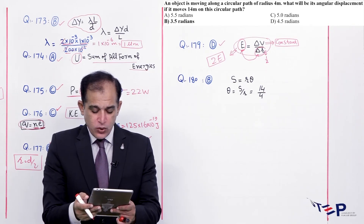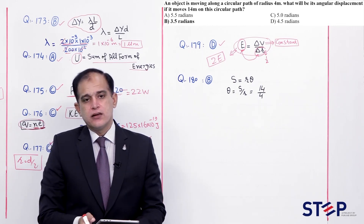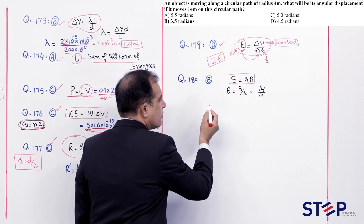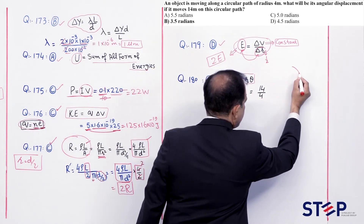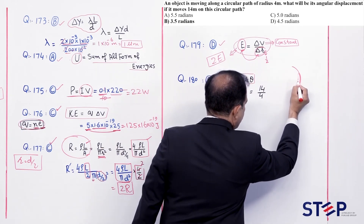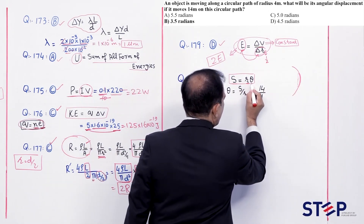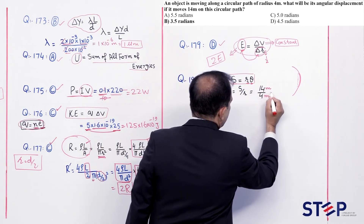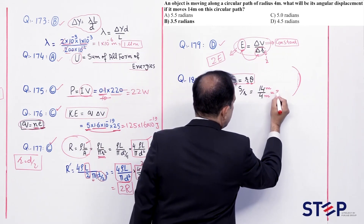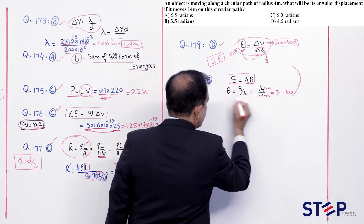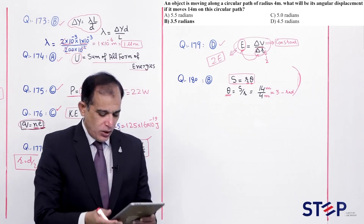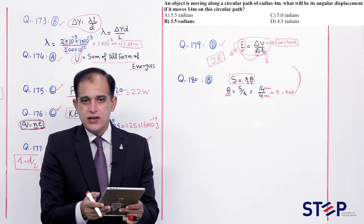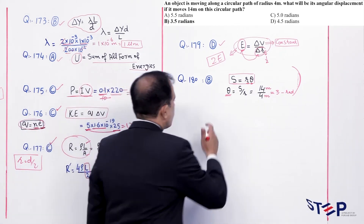Question number 180: Object moving on circular path of radius 4 m. It moves 14 m on this path. Angular displacement? θ = s/r = 14/4 = 3.5 radians. Correct option: Beta.